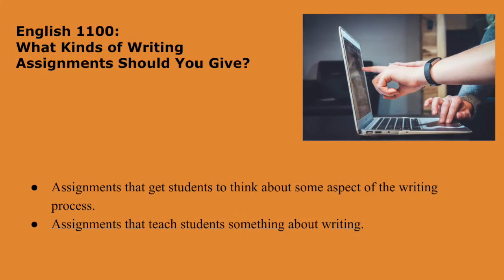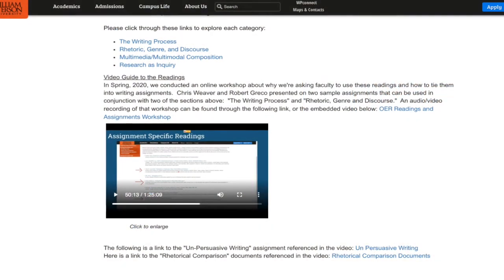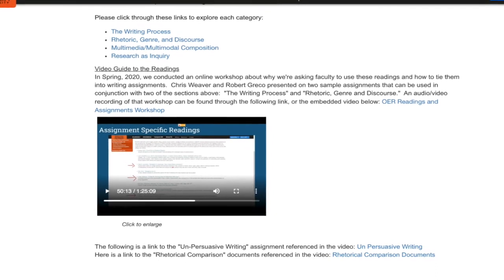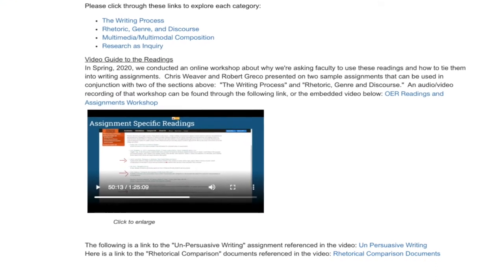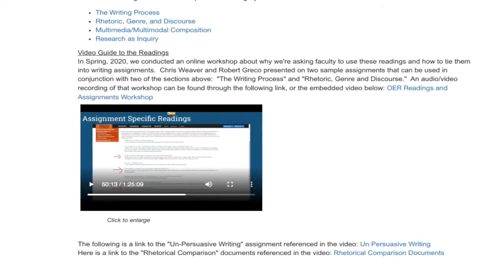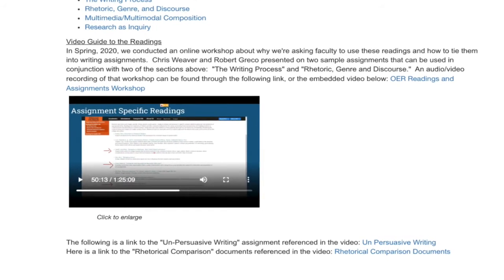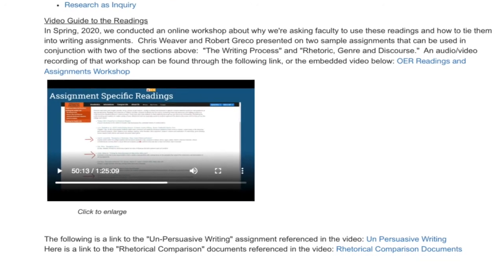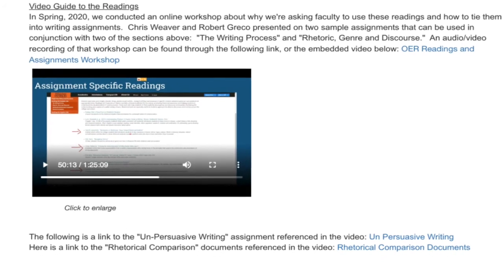So what kind of writing assignments should you give in English 1100? The short answer is assignments that get students to think about some aspect of the writing process — assignments that teach students something about writing. That leaves a lot of leeway for you to decide, but we do have some examples of writing assignments that do this and of how you can tie writing assignments into the readings we've provided. You can find links to these assignments on our English 1100 readings page, as well as a recording of a workshop that takes you through how and why these assignments fit our philosophy of teaching writing.